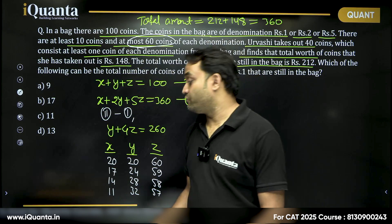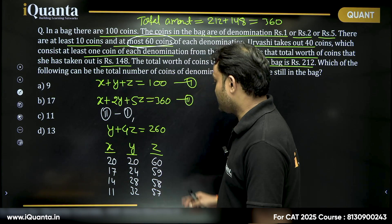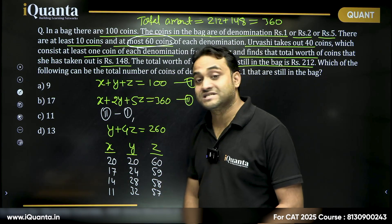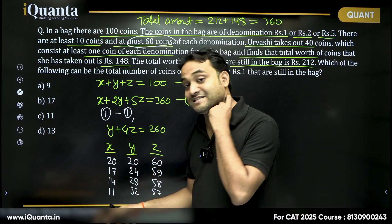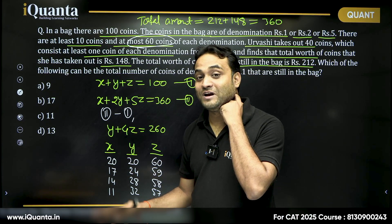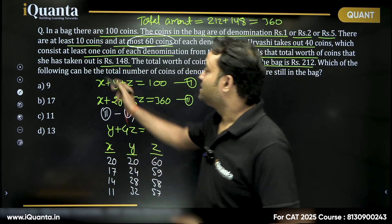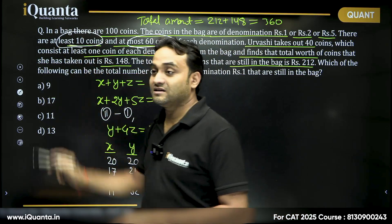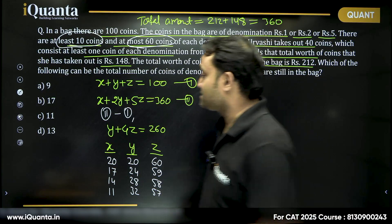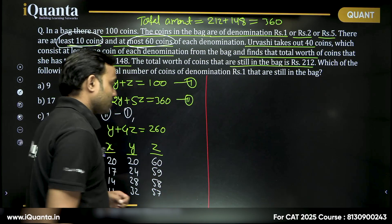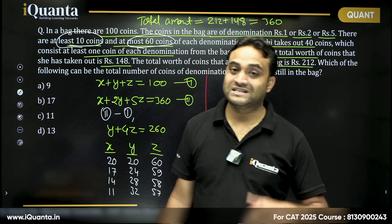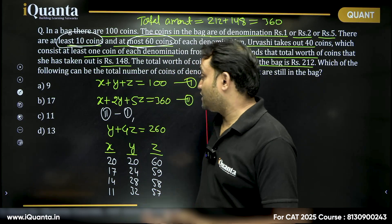Then again the next value we can take here is 57, this will be 32 and this will be 11. Now can we go beyond that? No. Why? Because if you are taking z is equal to 56, y will be 36 and x will be less than 10 which is not possible because at least 10 coins are there. So there are four possibilities, four combination possible where sum of all the coins is 100 and their value is 360.